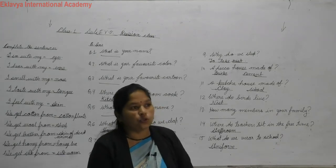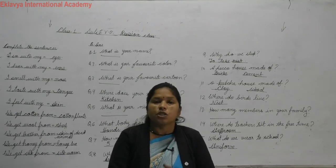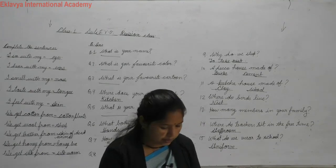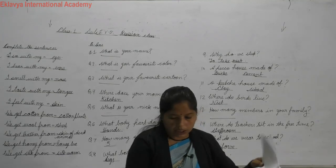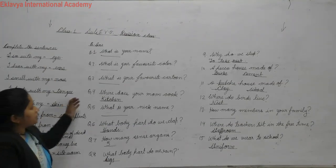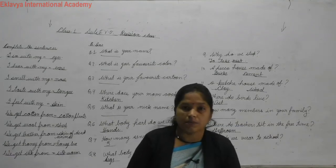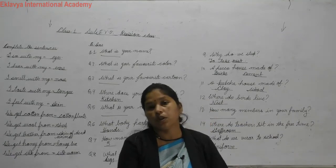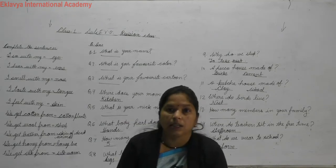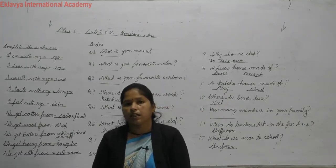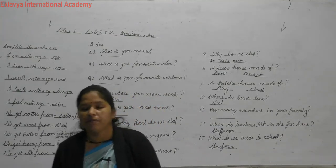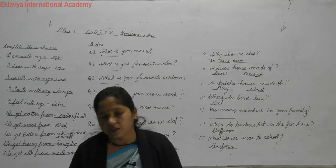In rainy season we use raincoat, gum boots, and umbrella. Raincoat and umbrella are made of waterproof material, so we do not get wet. Understand all these questions, learn them, and read all your chapters according to your syllabus and timetable. My best wishes before your exam. Thank you.